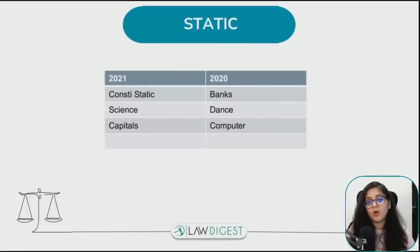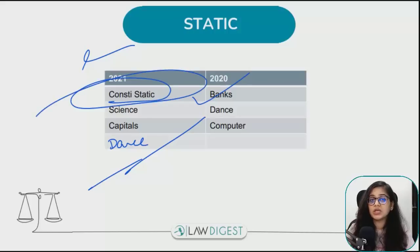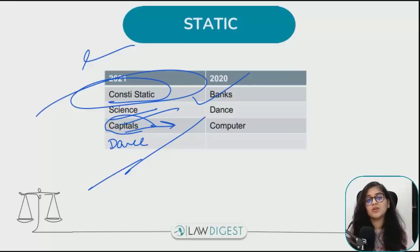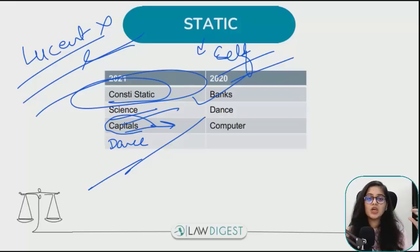Static GK भी important है और यह हमेशा varying रहती है। कभी banks से पूछे हैं, dance बहुत important है - 2021 में भी dancer से questions आए। Computer से abbreviations आ गई, constitution related static GK, science भी आ जाती है। Geography में capitals आ जाती हैं, rivers से question related आ जाता है। History से भी questions आ जाते हैं। Static GK आपको करनी जरूरी है - अपनी self guide book में जो static GK है वो कर लीजिए, questions practice कर लीजिए।